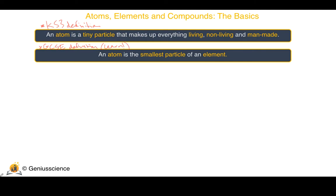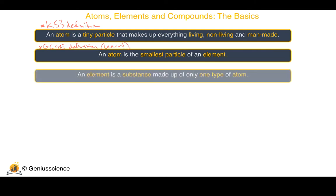So what then is the definition of an element? Well an element is a substance made up of only one type of atom.